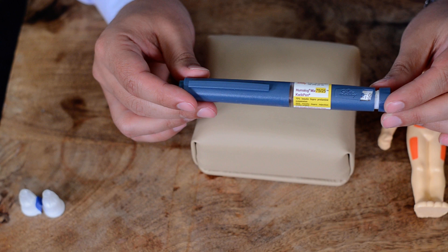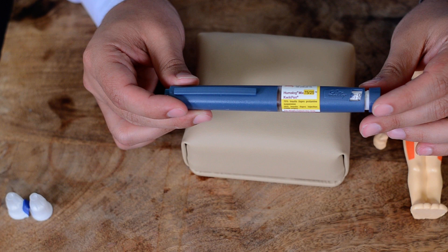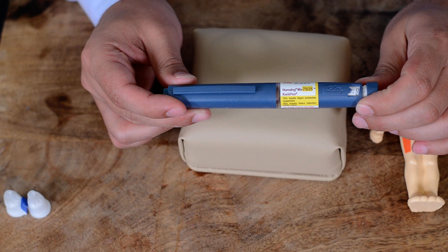One is an intermediate-acting insulin and the other is a fast-acting insulin. So 75% is insulin lispro protamine. That gives you around 8 to 10 hours of insulin coverage as a basal insulin.